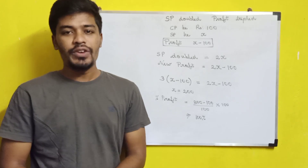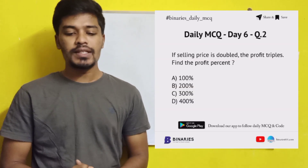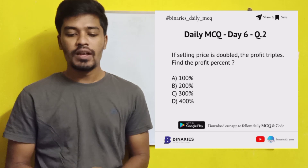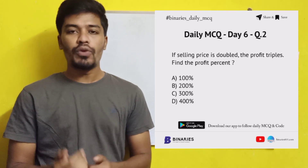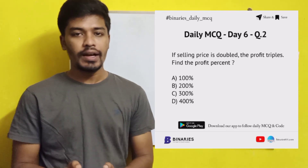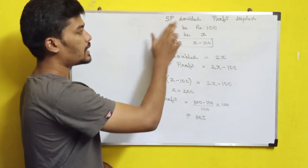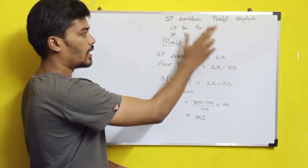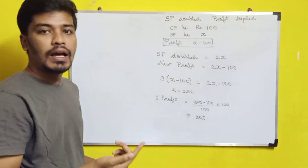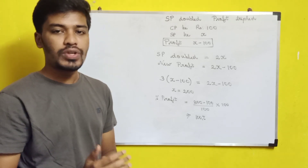Now let's look at the second question. If the selling price is doubled, then the profit will triple. Find the profit percentage. So what do we know? If the selling price is doubled and the profit is tripled, we need to find the profit percentage.